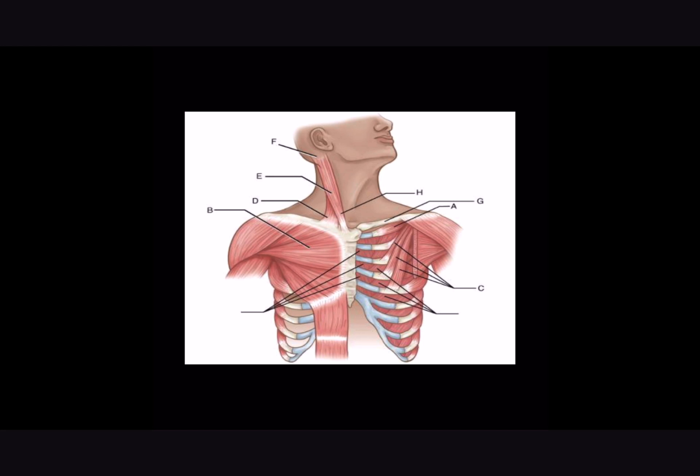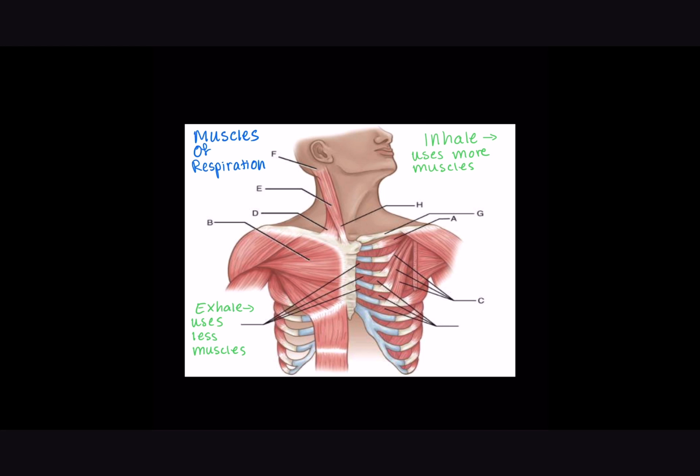Now while breathing in and out might not be something we think about all the time, it requires a lot of muscles to actually do that. This diagram shows us some of those in different layers — it's really interesting how something we don't have to consciously think about involves such complex work by our bodies. Breathing air in — inhaling — takes a lot more muscles than exhaling does.